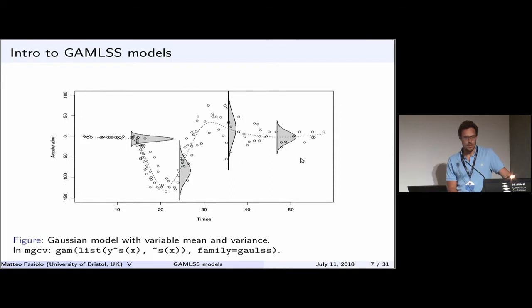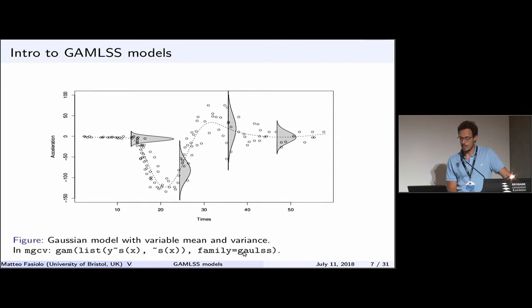The model formula you use to fit this in MGCV uses the GAM function, but your model formula is a list. The first sub-formula models the mean and the second models the variance. The family is GaussLSS, meaning you are using a GAMLSS with a Gaussian family.